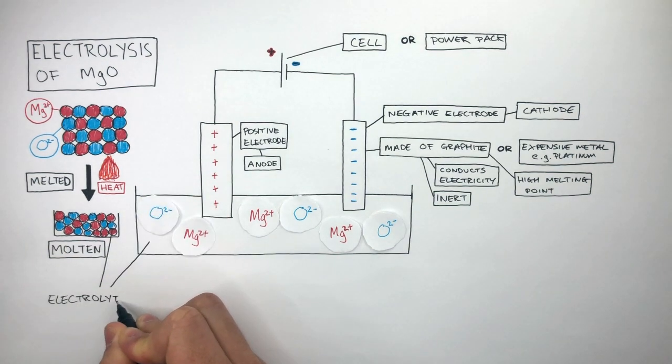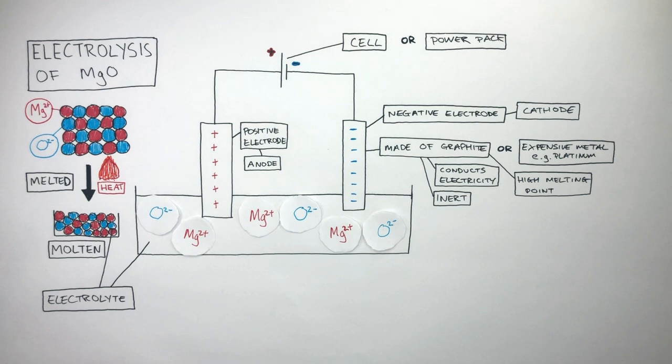This is the electrolyte represented by the diagram to the left and the pieces of paper representing the ions. The electrolyte is the ionic compound which is being broken down by electrolysis and whether the electrolyte is aqueous or molten the ions are always free to move in an electrolyte.